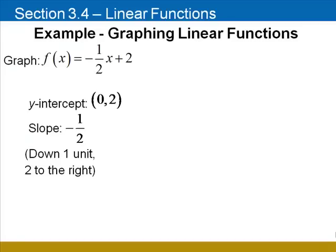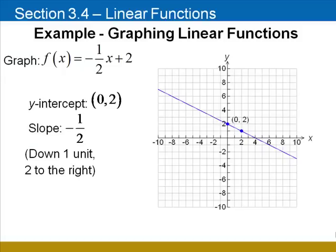That means that this line moves down one unit for each two units it moves to the right. To graph the line, begin by plotting the y-intercept at (0, 2), and then count down one unit and move two units to the right. Now draw the line that passes through these two points.